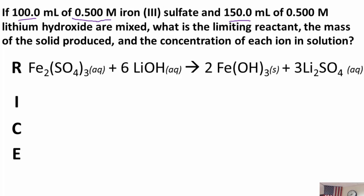We've got iron(III) sulfate — 100 mL of 0.5 M — and 150 mL of lithium hydroxide. Those go together as a precipitation reaction. If you look at your solubility rules, you'll realize hydroxides are often insoluble, and this is one of those times. It forms solid iron(III) hydroxide — that's the precipitate — and the other product is aqueous lithium sulfate.